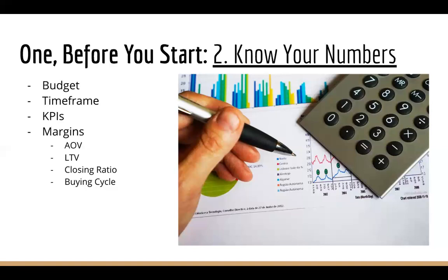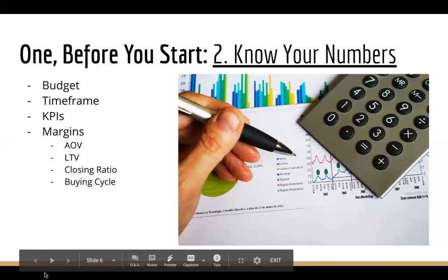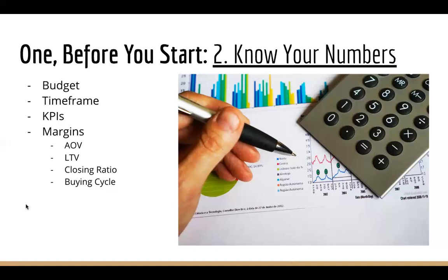Knowing those numbers will really help — it can make your ads perform a lot better and help you figure out if the timing is right to do ads now. The other thing that's good to know is your closing ratio. Maybe you close one new client for every 10 calls — so how many calls do you need to book? These are things you can learn as you go, but they're really important numbers to help you be successful.